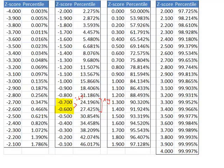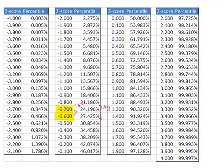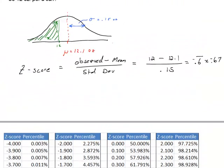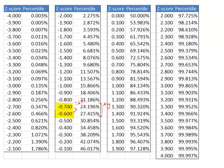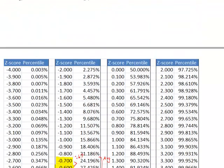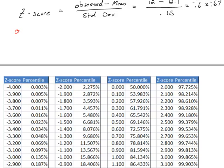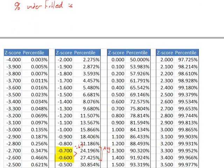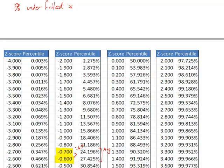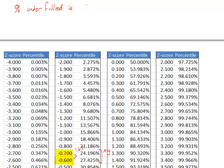My percentage that are underfilled is going to be the average of 24.196% and 27.425%.